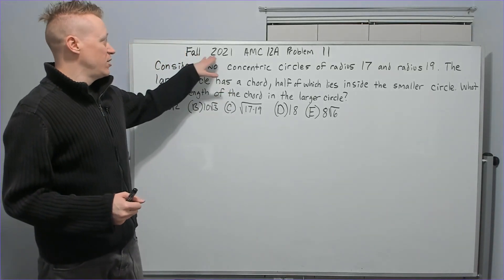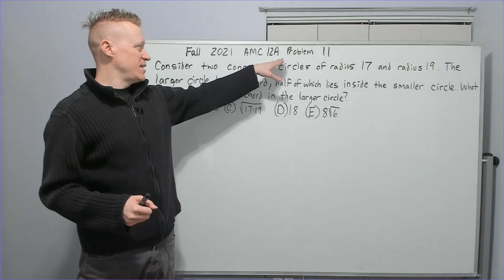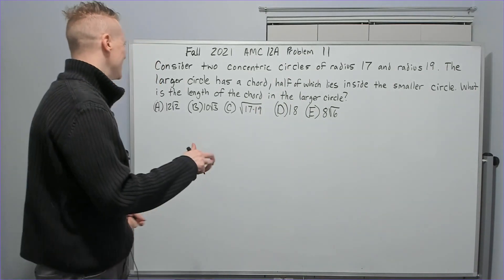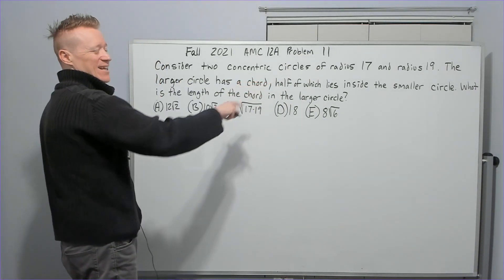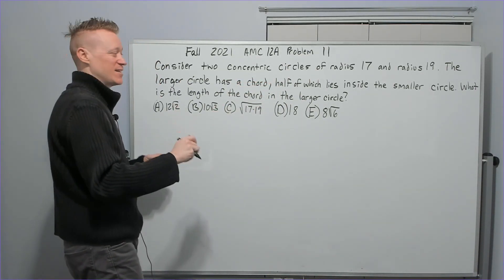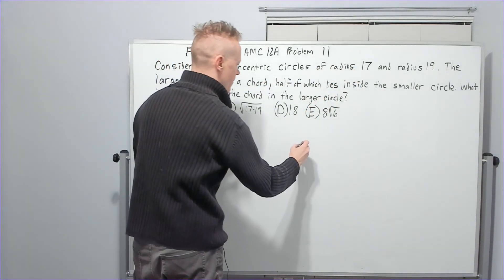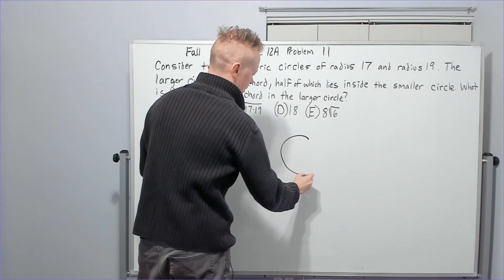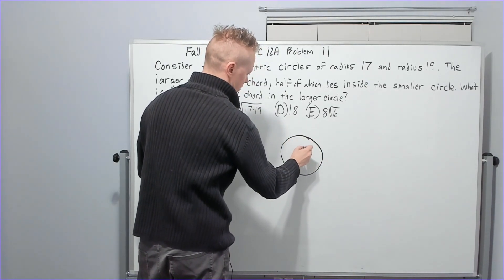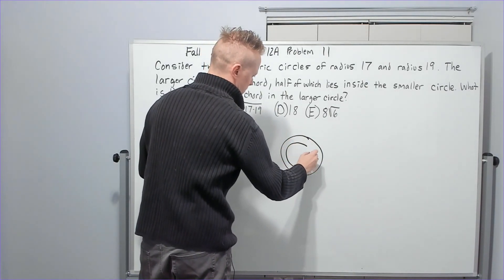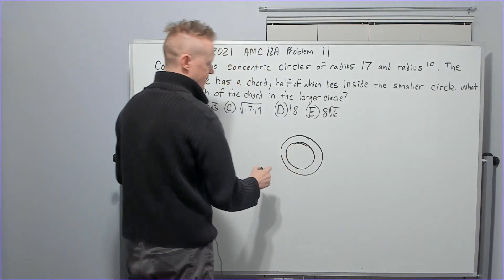Now we're going to be doing the Fall 2021 AMC 12A Problem 11. Consider two concentric circles, that means same center, of radius 17 and radius 19. Let's draw them. One circle, two circles, something like that.